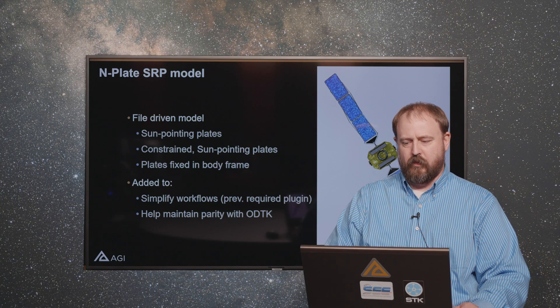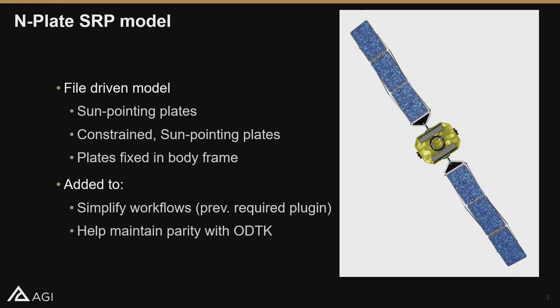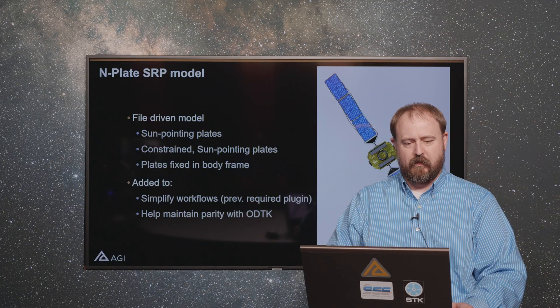One of the larger improvements we've made is adding an in-plate solar radiation pressure model directly into Astrogator. Previously you were able to do this with a plug-in, but folks always had problems getting the plug-ins to work or getting them registered. So we decided to make it easier for people to use this capability.